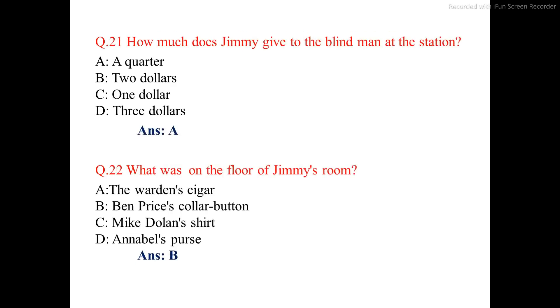Question number 21. How much did J.B. Shaw give to the blind man at the station? The correct answer is option A: a quarter.